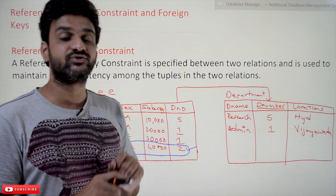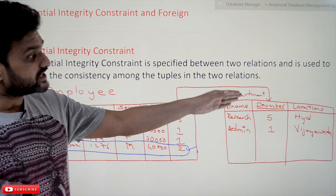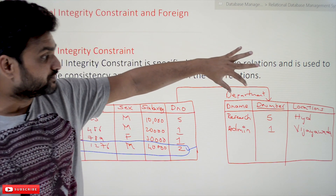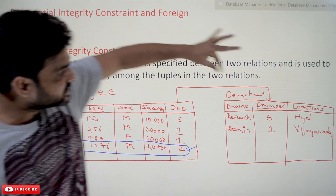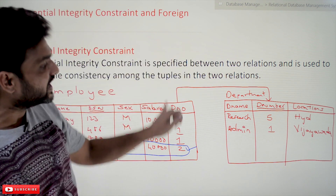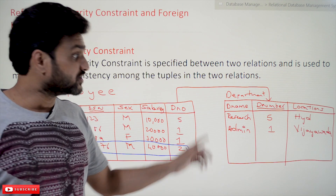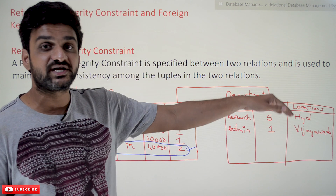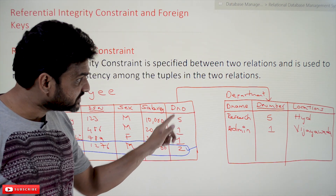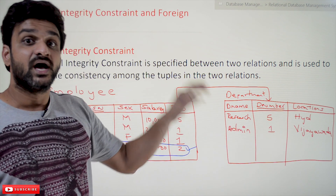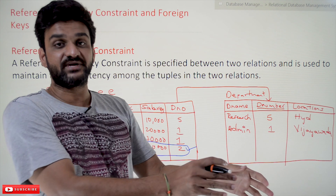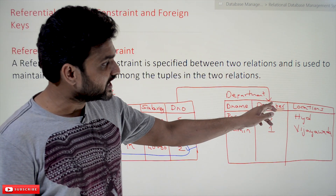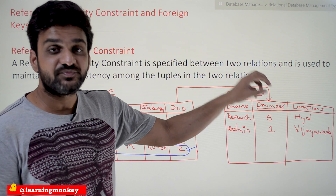When an attribute is referencing another attribute in another table, a relationship exists. An important point to understand is that the attribute being referenced must always be a primary key, because every tuple in that table should be uniquely identified. Since these values are identifying a tuple in that table, that identification can only be uniquely made by the primary key. If an attribute is referencing another attribute in another table, that attribute should be a primary key.